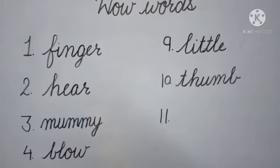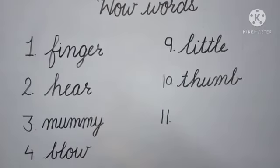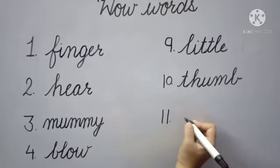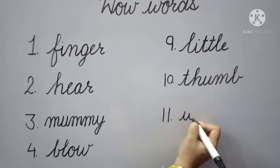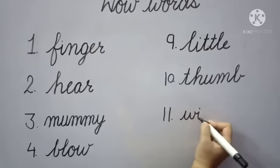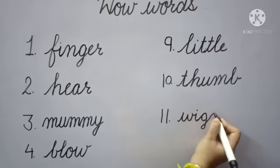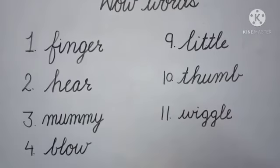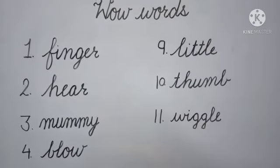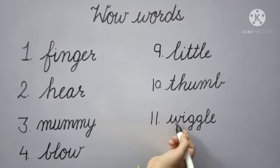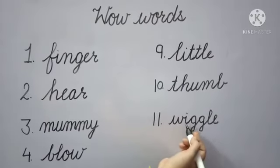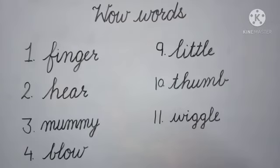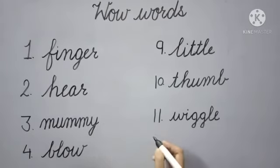Next, number 11: 'wiggle'. What is the spelling of wiggle? W-I-G-G-L-E, wiggle. Wiggle means 'lachila pan' (flexibility). Flexibility.